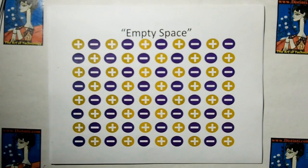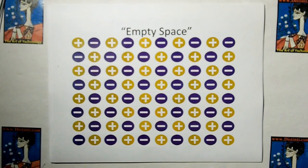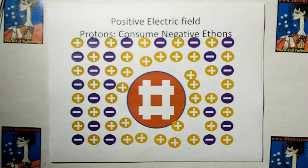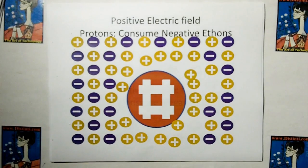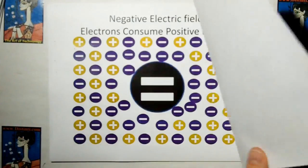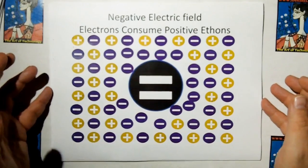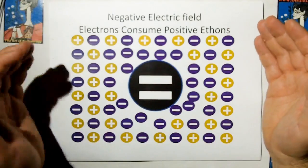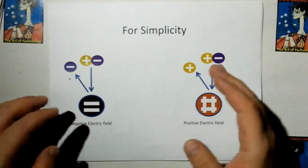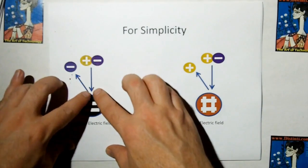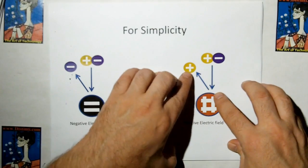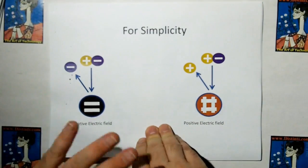First, let's look at empty space filled with ethons. Because there's an even number of positive and negative ethons, this space has virtually zero inertia. Now if we throw a proton in there — positively charged particles consume negative ethons and throw off the positive ethons. Negative electric fields are created by negatively charged particles; in this case an electron consuming positive ethons and throwing off the negative ethons. For the electron: a positive-negative ethon pair comes in, the positive is consumed, the negative is thrown off. For the proton: the negative is consumed and the positive is thrown off.